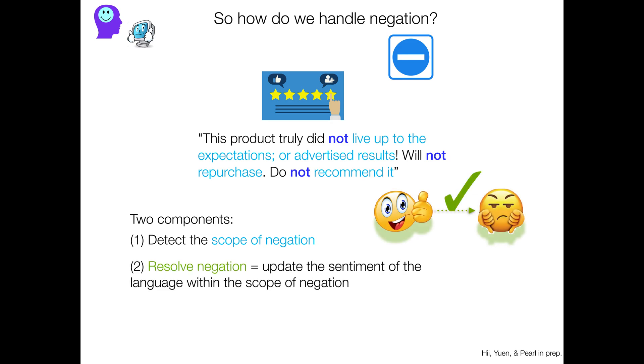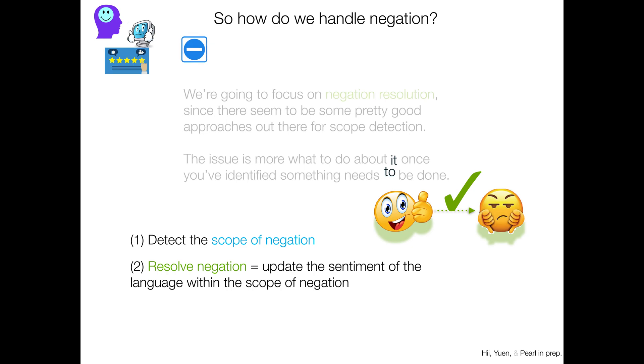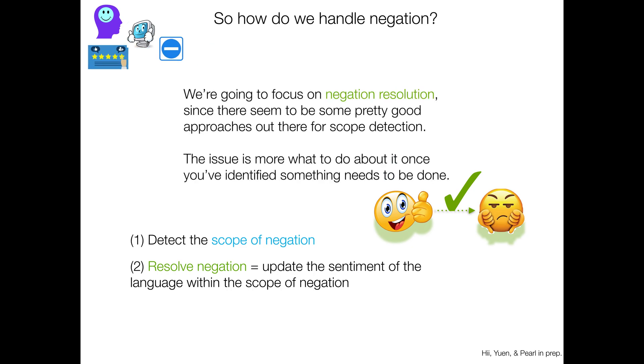And the second part is to resolve that negation. You want to update the sentiment of the language within the scope of negation and fix it so it has the right sentiment, the intended sentiment. And so we're going to focus today on negation resolution since there actually seem to be some pretty good approaches out there for scope detection. The issue is more what to do about it once you've identified that something in fact needs to be done.